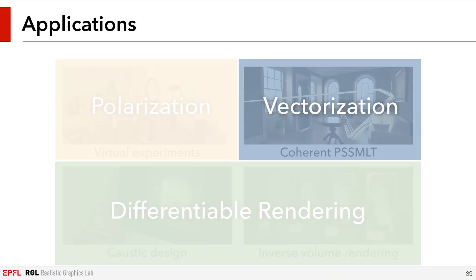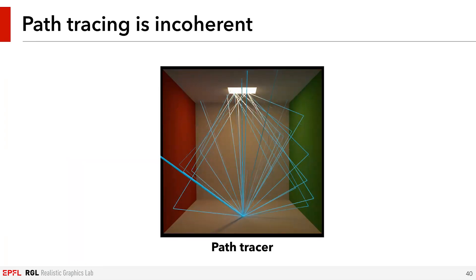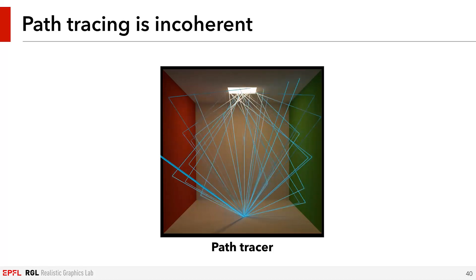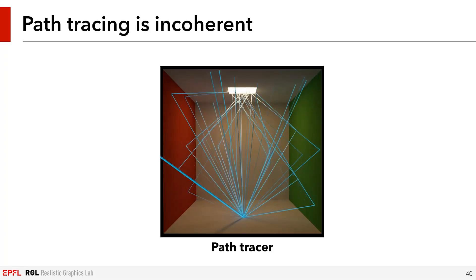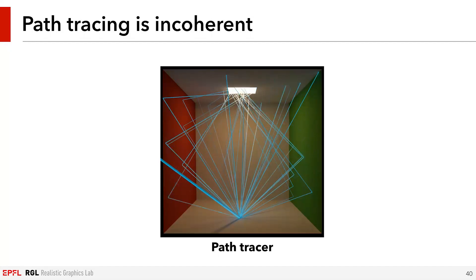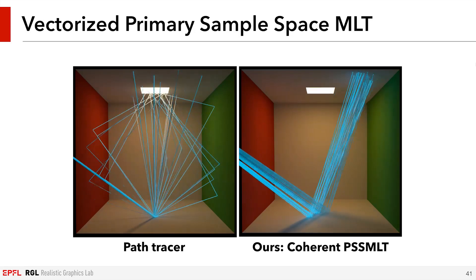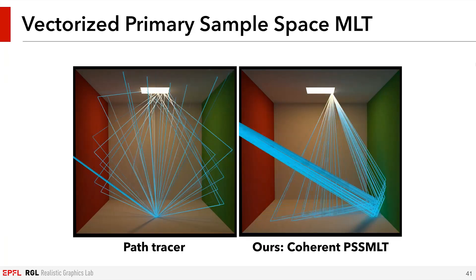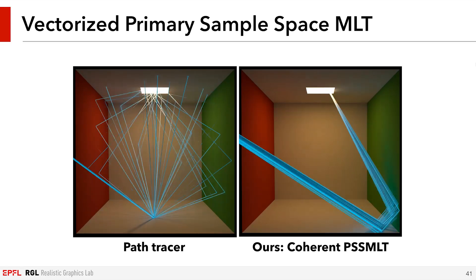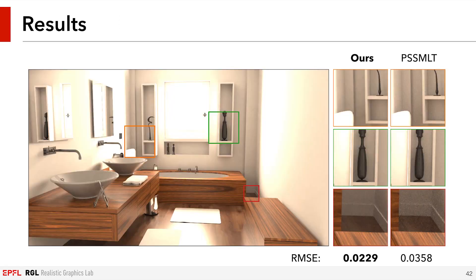Now let's have a look at an example application where we use Mitsuba 2's vectorized rendering capabilities. Standard path tracing evaluates light paths in a highly incoherent manner. Using vectorized instructions does not result in a large performance gain since the scene traversal is so incoherent. In our paper, we introduced a novel coherent primary sample space metropolis light transport algorithm. This algorithm evaluates a coherent bundle of rays, but still results in an unbiased estimate of the true image.